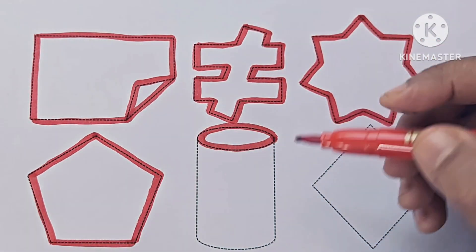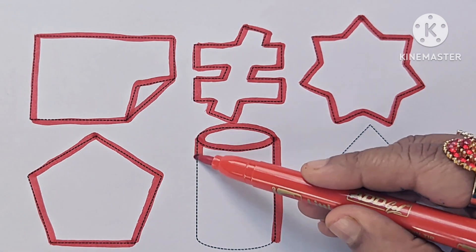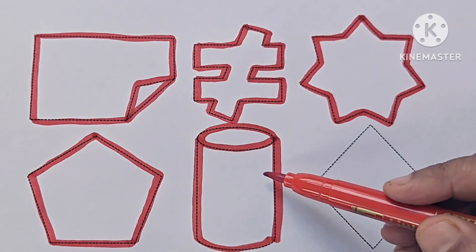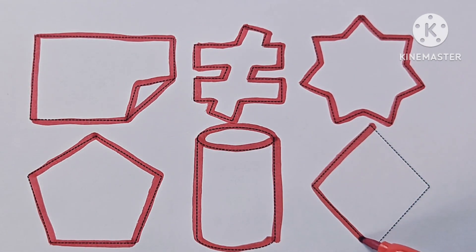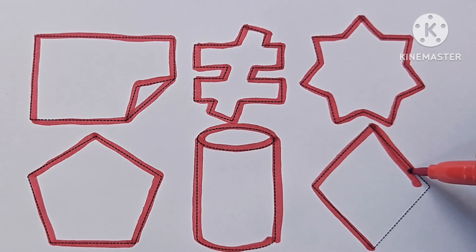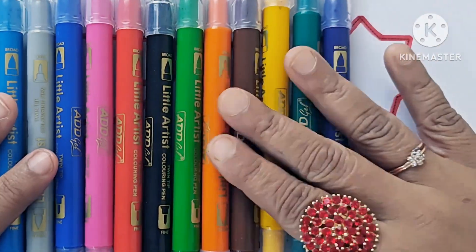Yes sir, yes sir, three bags full. One for my master, one for my dame, and one for the little boy who lives down the lane. Rhombus. Let us know color names.